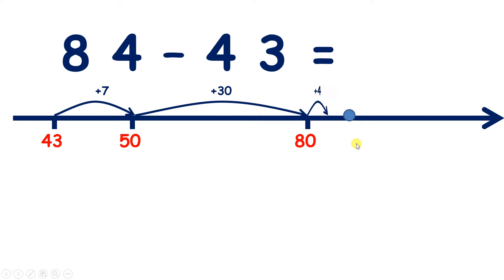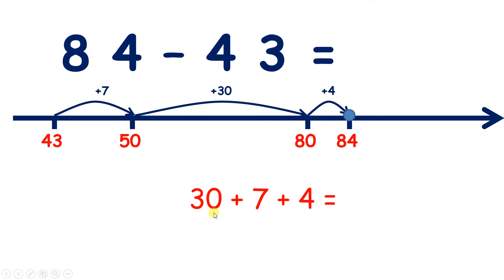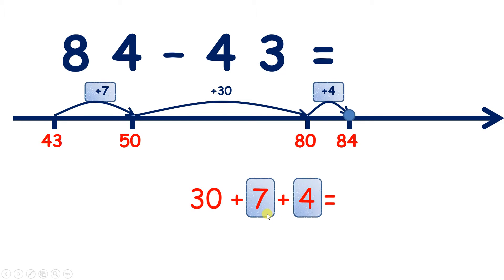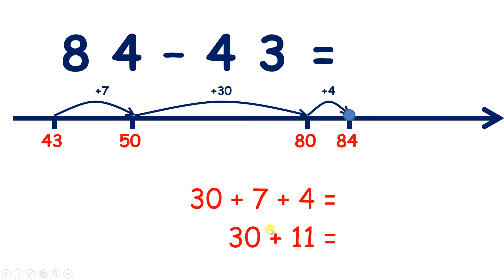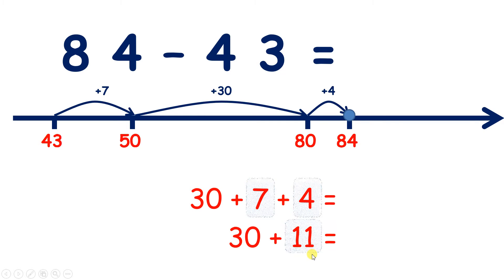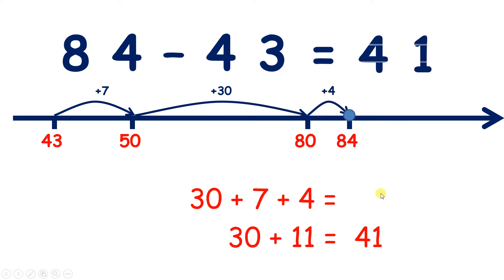And now I need 4 to get to 84. So now I'm adding 30, 7, and 4. So I'm adding 30 plus 11, and that gives me 41. So that's my answer.